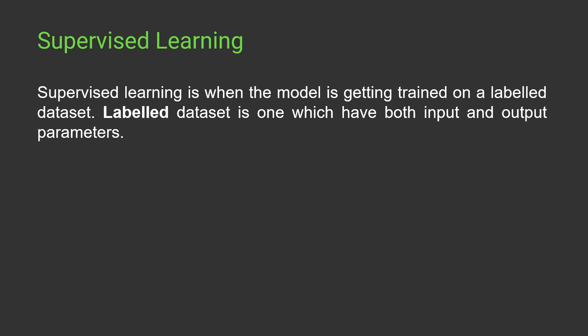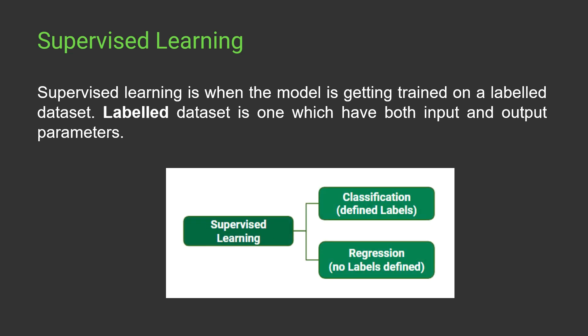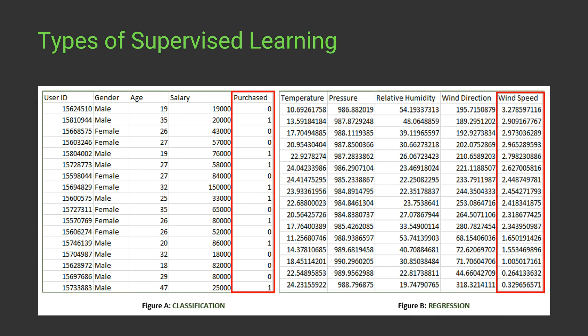Based on the dataset, supervised learning is divided into two types: classification and regression. In case of classification, we have defined labels — meaning the dataset is discrete. In case of regression, we have continuous data in a fixed range. Let's look at two example datasets — one for classification and one for regression.